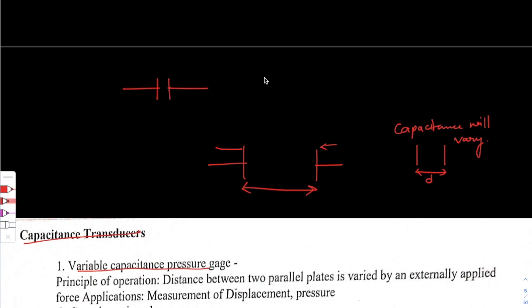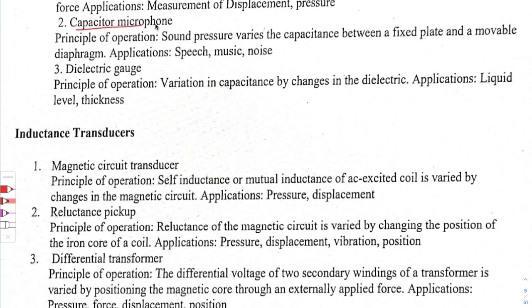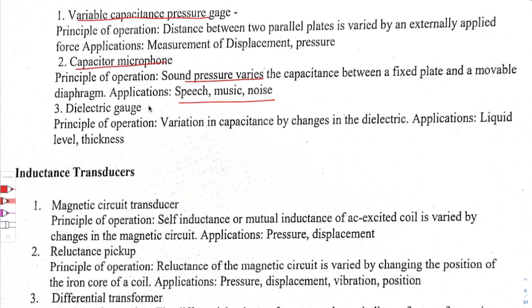We record this change in capacitance to measure the applied force. Another example is the capacitor microphone: the capacitance between a fixed plate and a movable diaphragm changes due to sound pressure. The diaphragm oscillates because of air pressure generated by sound waves, the capacitance changes, and then we measure and transfer that signal.